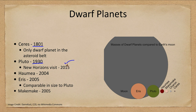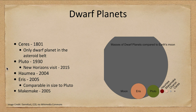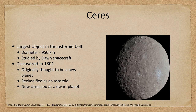Pluto was discovered in 1930 and was visited by the New Horizons spacecraft in 2015. Only Ceres and Pluto have been visited by spacecraft. We also discovered Haumea in 2004, Eris in 2005, and Makemake in 2005. Of these, Eris is the one comparable in size to Pluto — maybe a little bigger or a little smaller, but roughly the same. It's difficult to be precise because we have only seen it from Earth and have not visited it.